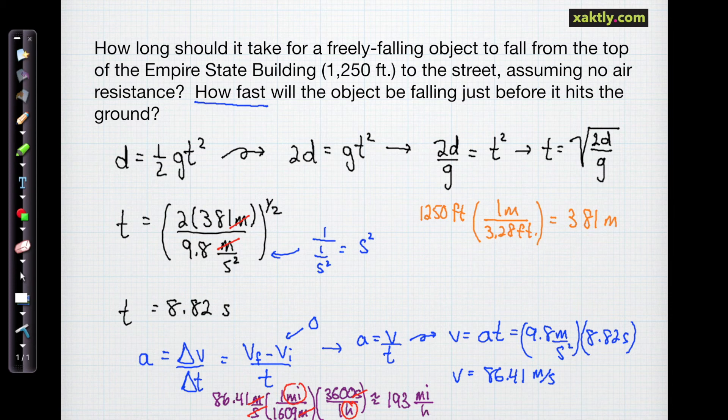Now something that falls from that height rarely gains that kind of velocity because of air resistance. So something dropped off that building won't really be going that fast when it hits the ground.